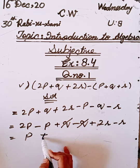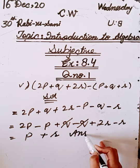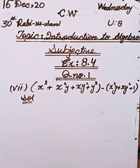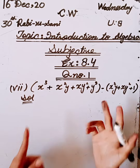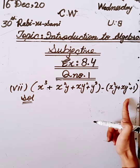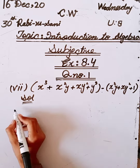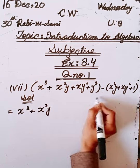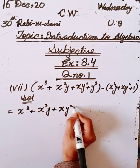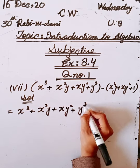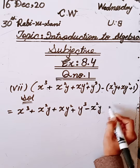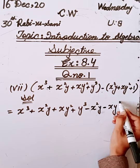Now we will solve question number seven. We will write the first value as it is and multiply minus with all the values. Let's start the solution: x³ + x²y + xy² + y³. We have opened the bracket. First terms as it is, we will multiply: minus x²y, minus xy², minus y³.